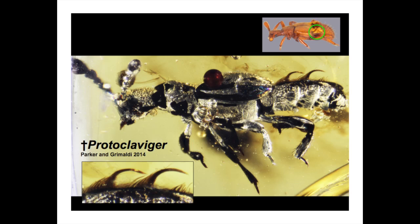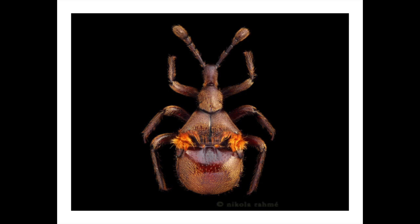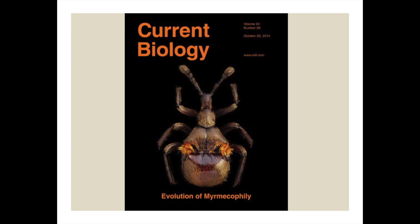One news outlet referred to this beetle as the 'primordial moocher,' which I really like. Nicola took a really cool picture of one of the living species — Clavager longicornis, a European species — and we managed to get onto the cover of the journal Current Biology when we published the fossil species.